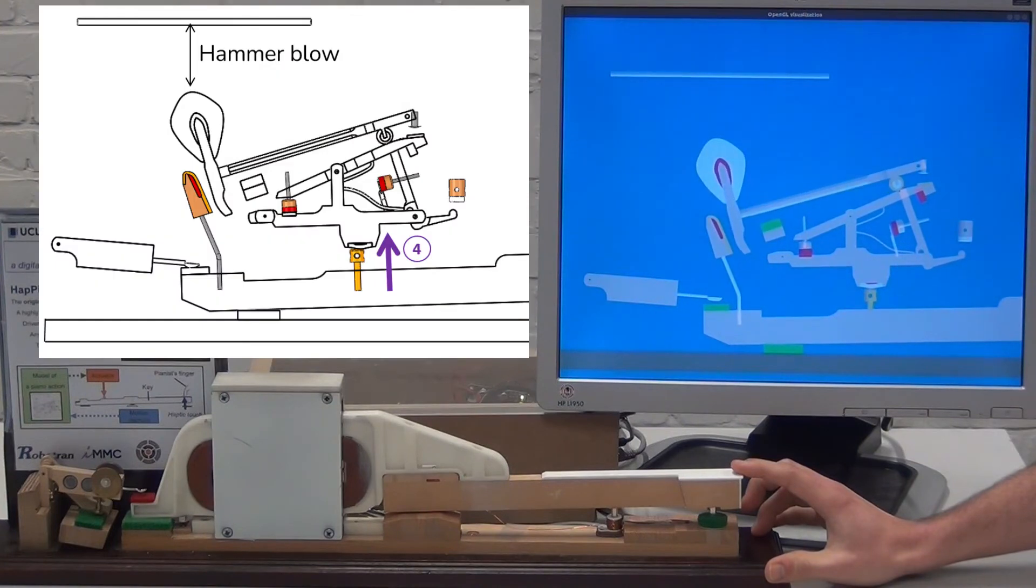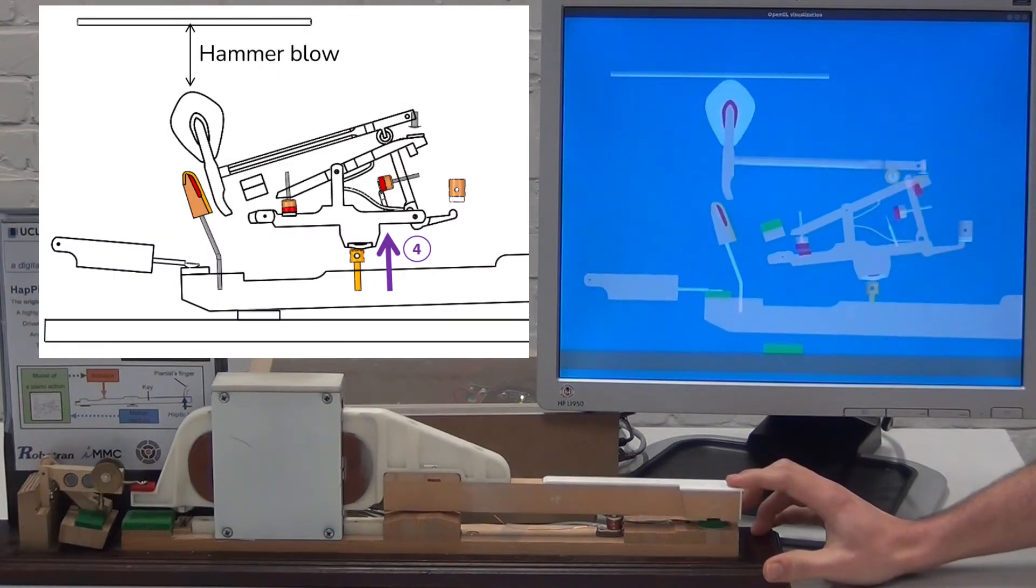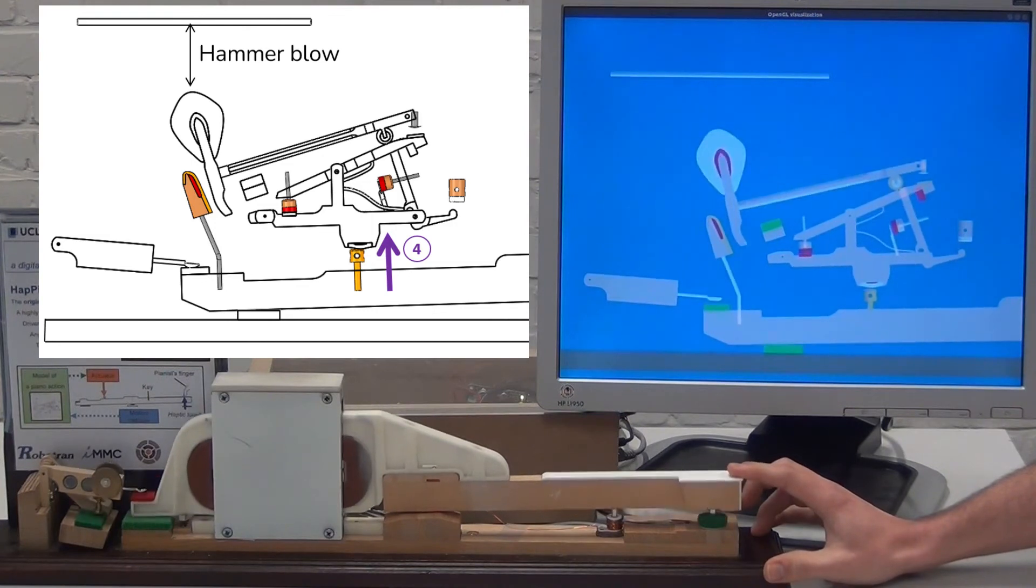If we change, for example, the hammer load, so the hammer is closer to the string, we feel a different haptic feedback.